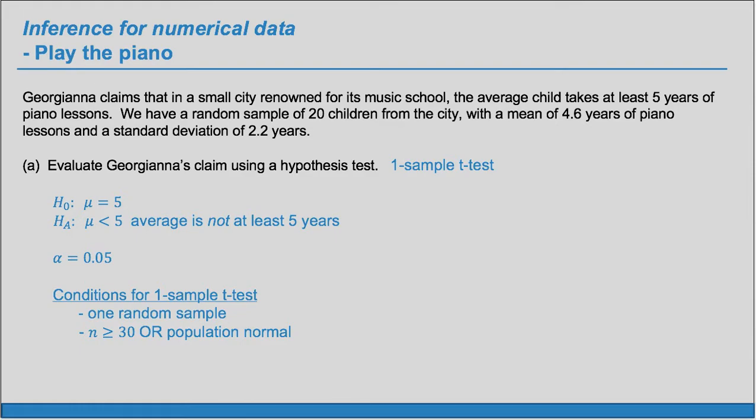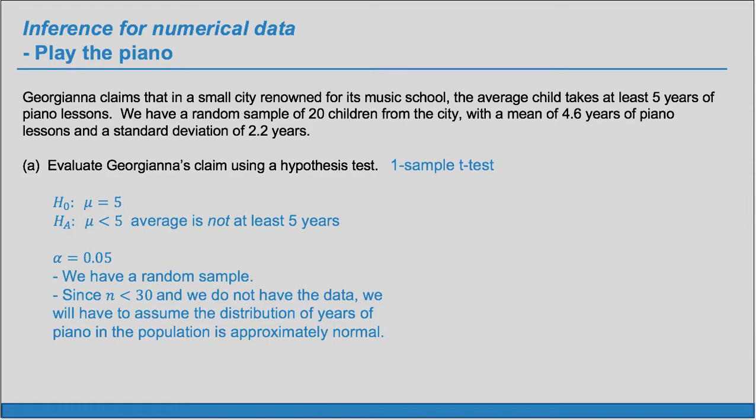Now, very importantly, we have to verify the conditions are met. The conditions for our one sample t-test are: we need one random sample, and we need a sample size of at least 30 or the population is normal. Here we do have a random sample. Since n is 20, which is less than 30, we don't have the data to graph and assess the distribution, so we're going to have to assume that the distribution of the population is approximately normal.